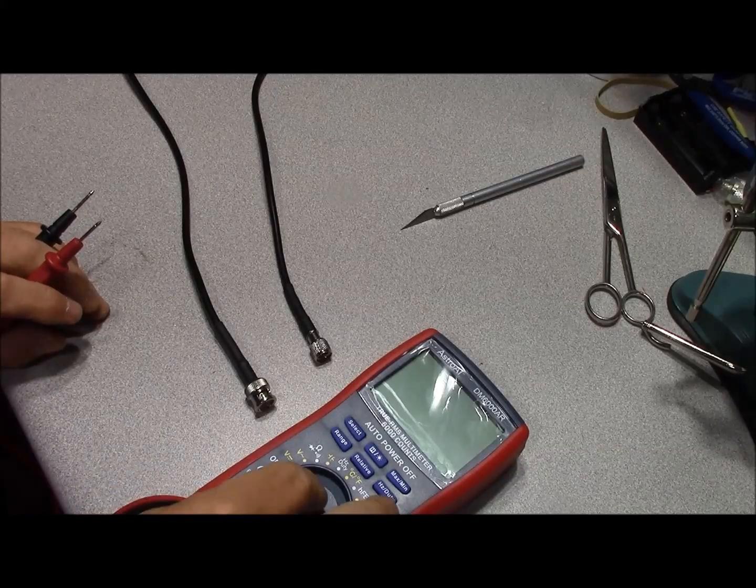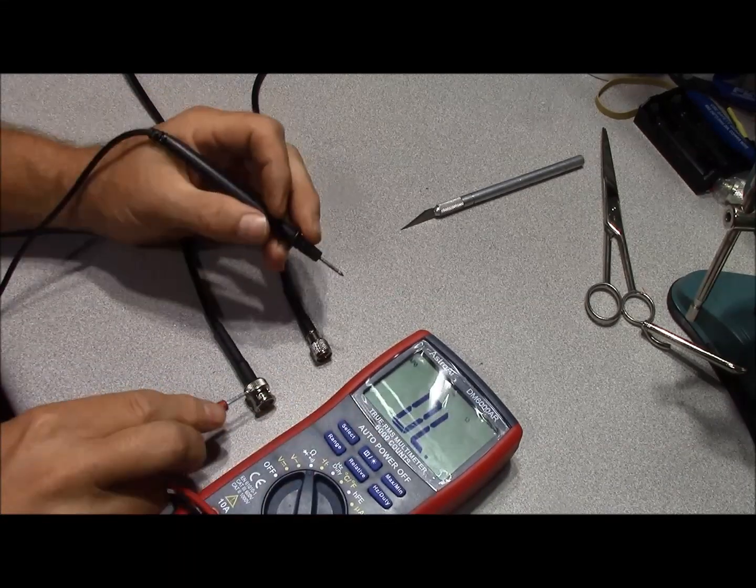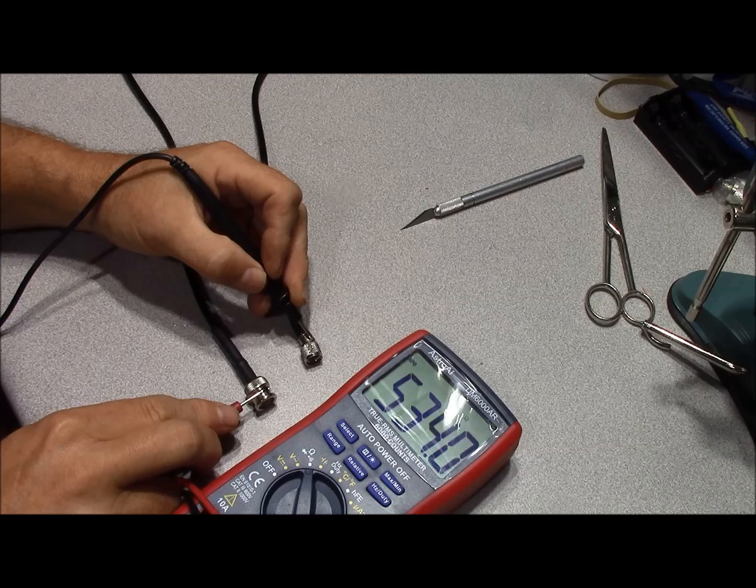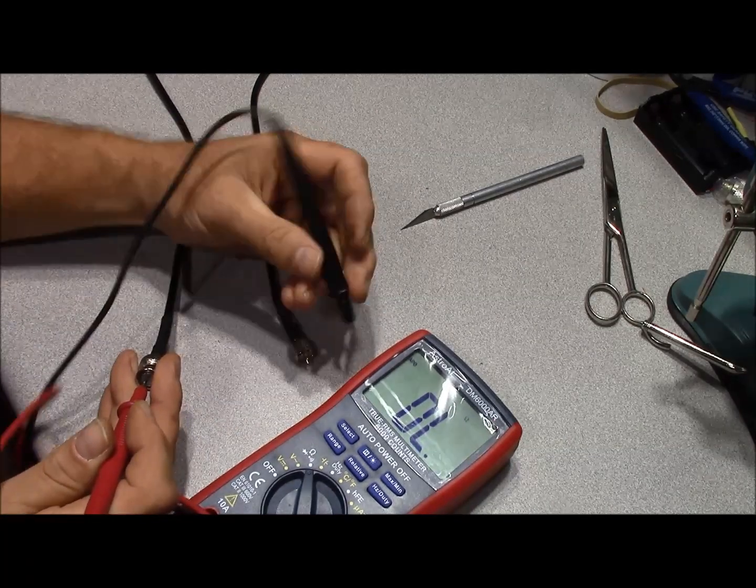The most simple way to check your work is going to be with a multimeter. And you can just set it for continuity. I just like it when it makes noise. So you can see that we have continuity there and now continuity in our center pin.